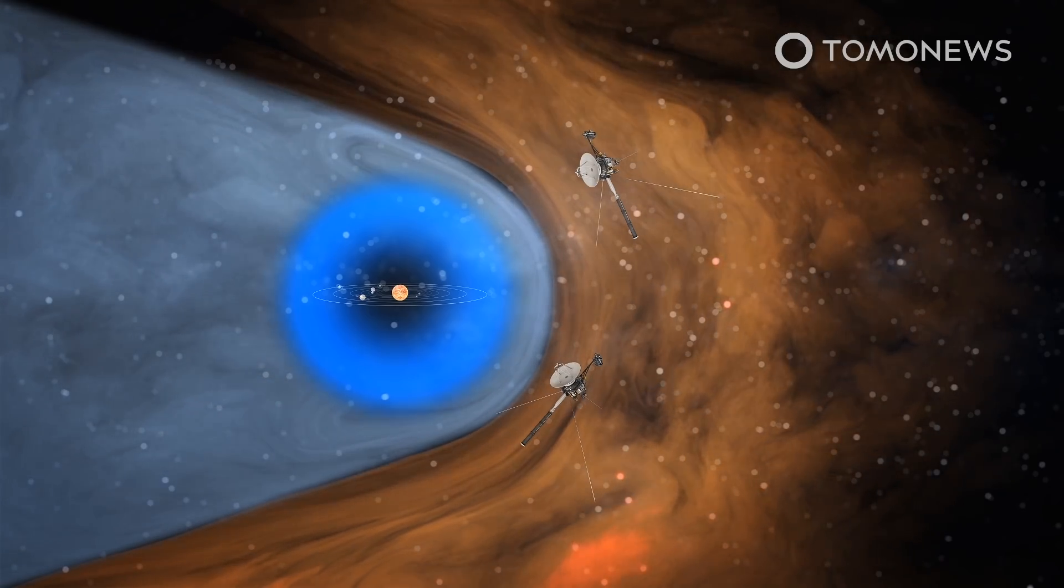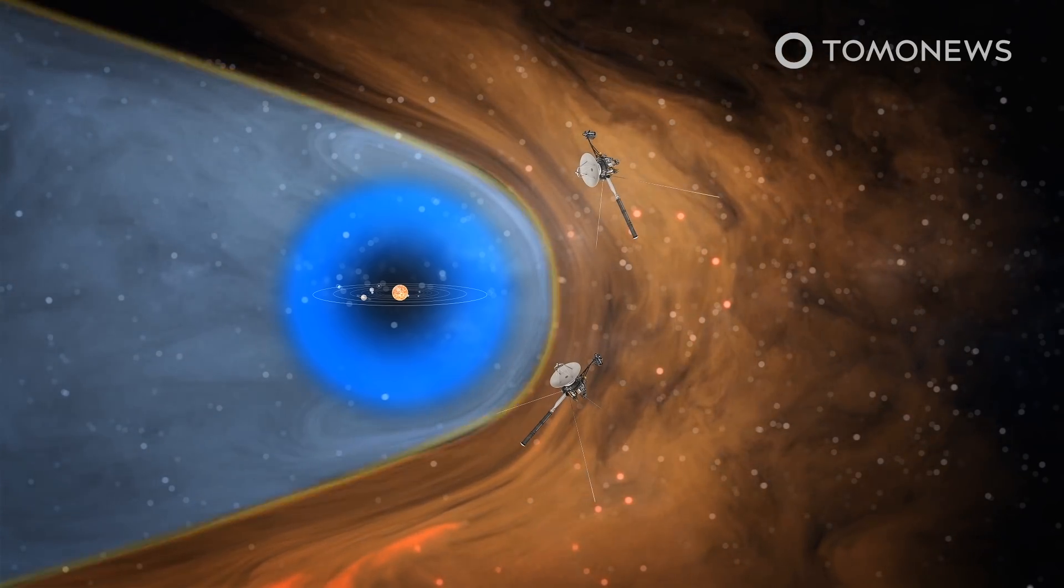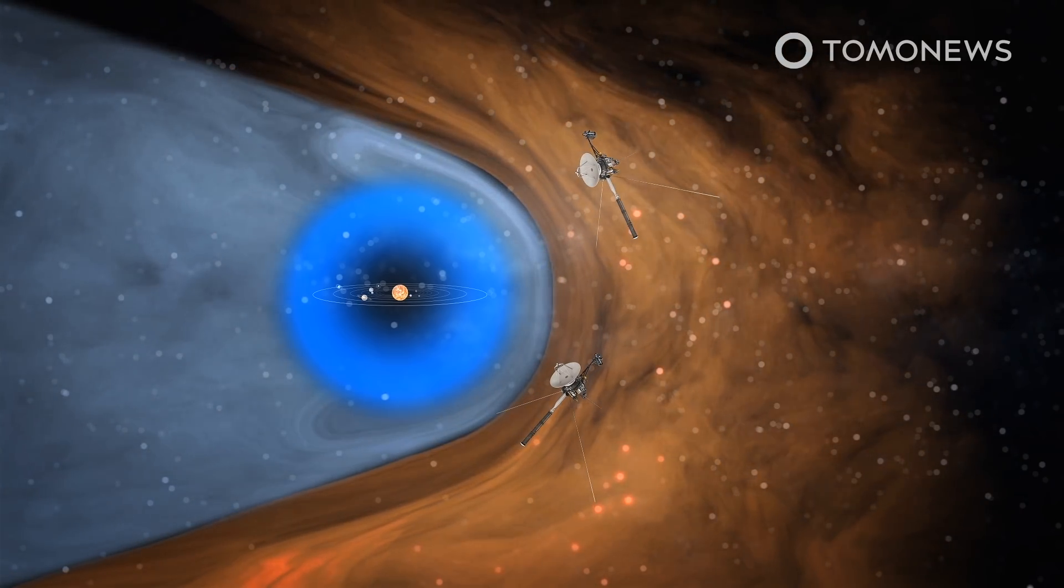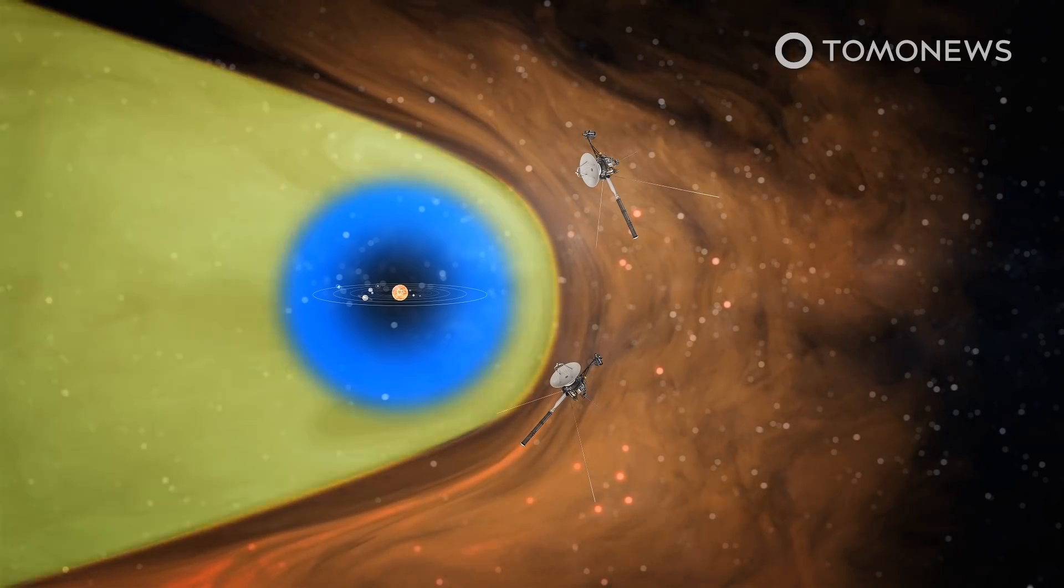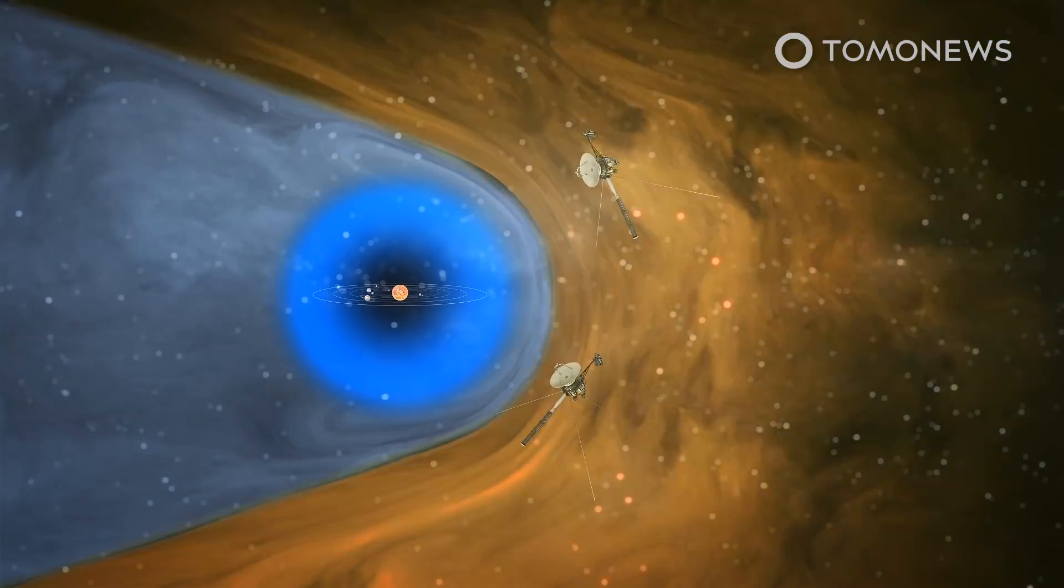The solar system's theoretical boundary is called the heliopause. An article published on NASA's website describes the heliopause as the place where the solar wind, which emanates from our sun, is no longer strong enough to push back interstellar winds from the surrounding stars.